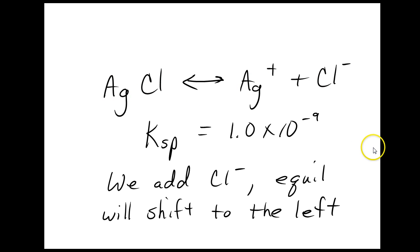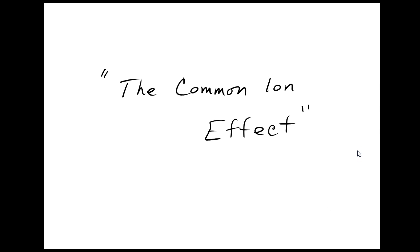Here's the equilibrium for AgCl dissolving in water. If we add some Cl minus ions here, as in the case where we're trying to dissolve it in MgCl2, the equilibrium is going to shift to the left, and not as much AgCl will dissolve. That is the common ion effect.